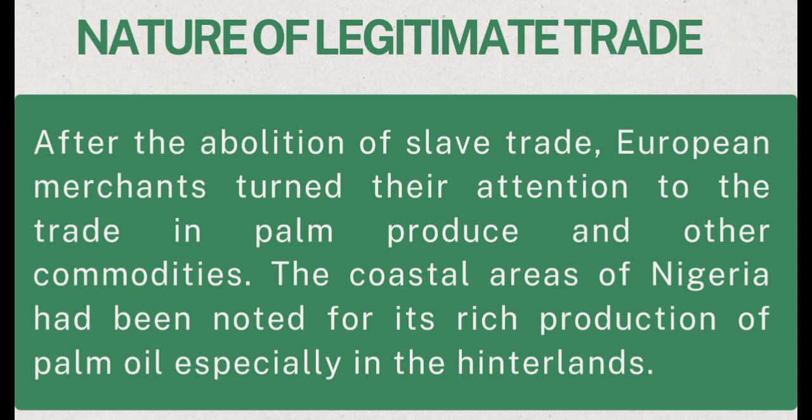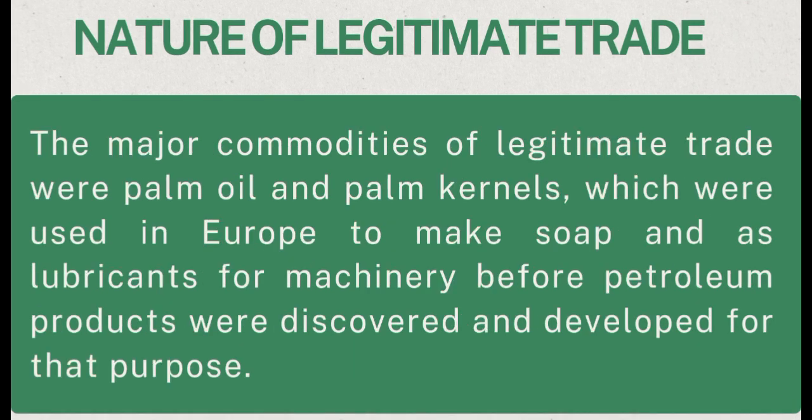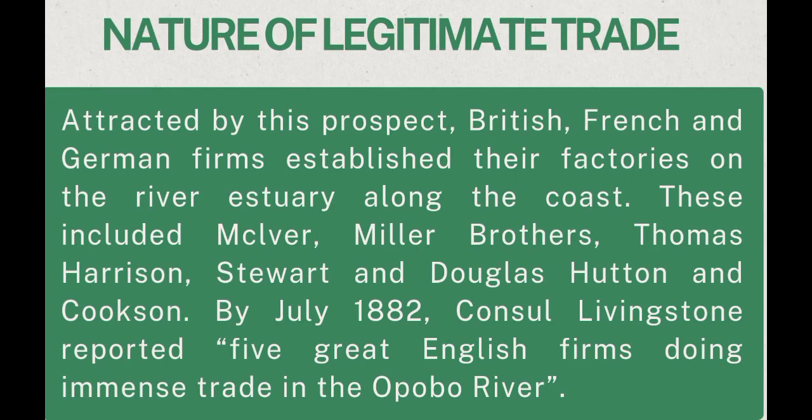After the abolition of slave trade, European merchants turned their attention to palm produce and other commodities. The coastal areas of Nigeria had been noted for their rich production of palm oil, especially in the hinterland. The major commodities of legitimate trade were palm oil and palm kernels, which were used in Europe to make soap and as lubricants for machinery before petroleum products were discovered and developed for that purpose.